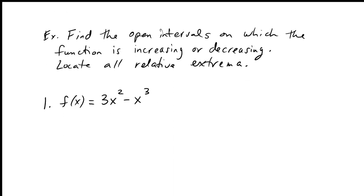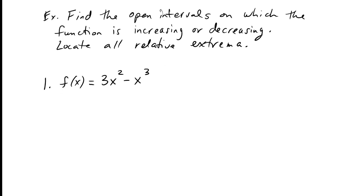Let's find the open intervals on which the function is increasing or decreasing, and locate all relative extrema. We'll look at the function 3x² minus x³. To find increasing/decreasing behavior and extrema, I need the first derivative. The first derivative is 6x minus 3x², which factors as 3x times (2 minus x).